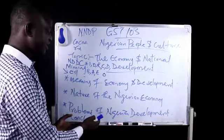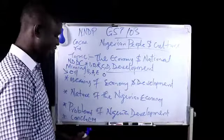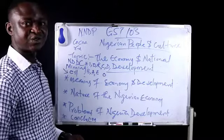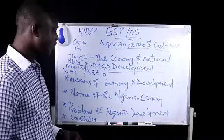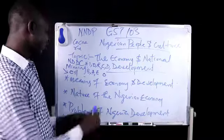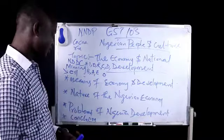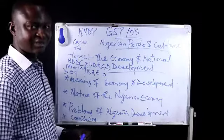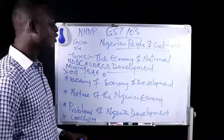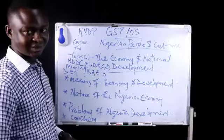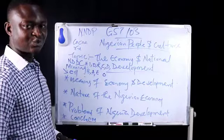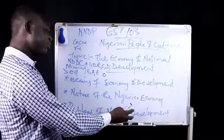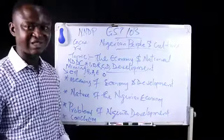Now, let's look at Nigeria and her development. What are the problems of development in Nigeria? What are the factors that have, in one way or the other, hampered the development of Nigeria? Number one factor is external to Nigeria — the coming of the European powers, what you call imperialism, is the first factor to consider when discussing the problem of national development in Nigeria.